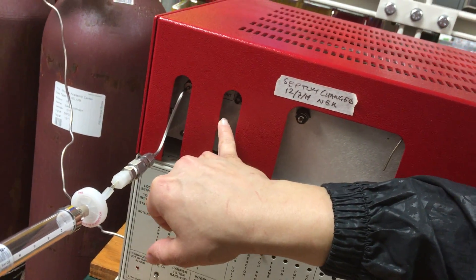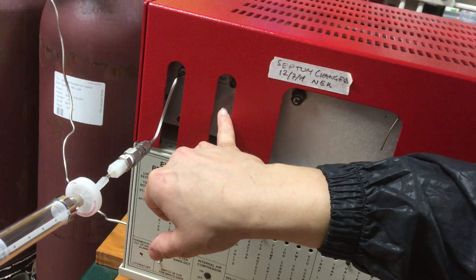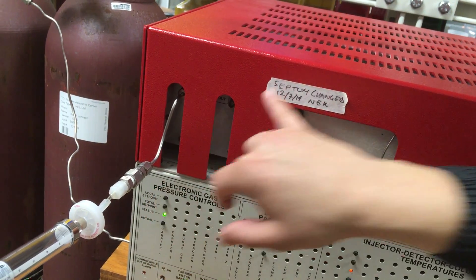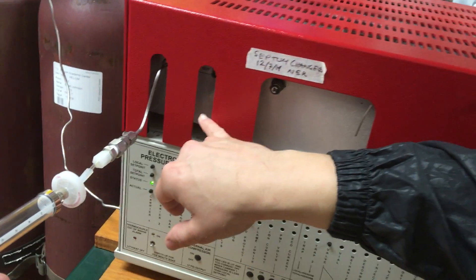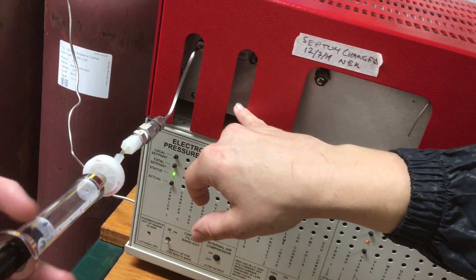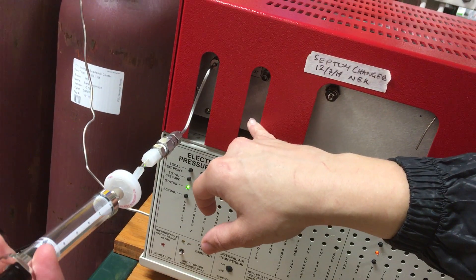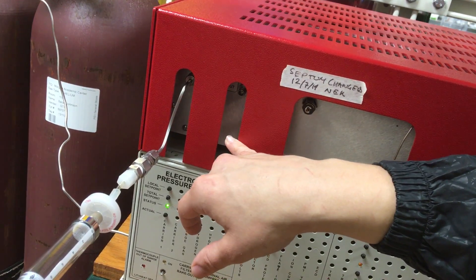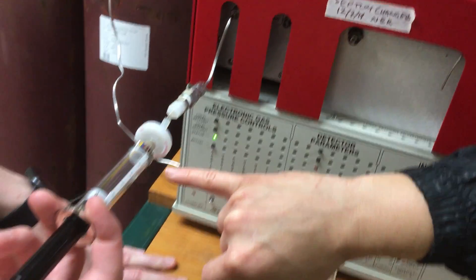And so we recommend flushing it with 10 fold the amount that the 1 milliliter loop can hold, because if we only put the 1 mill in it, it's possible it'll be contaminated with air or whatever previous sample might be lingering inside of that loop. And so that's why we have so much going in.